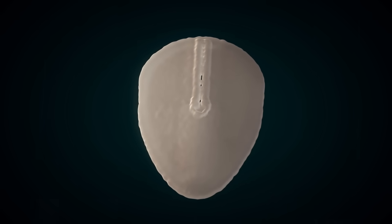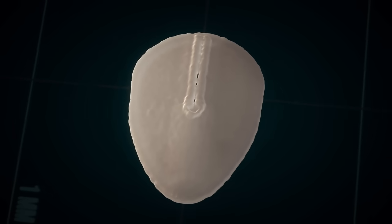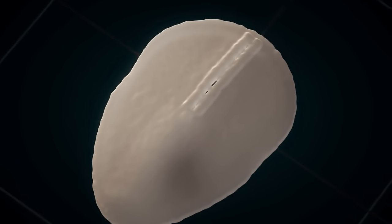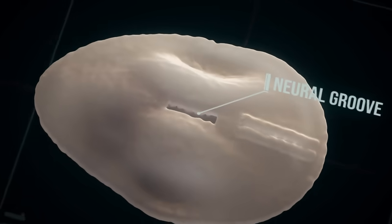In the course of the third week of development, neurulation occurs. At that time, the foundation for the central nervous system is laid. The neural groove is formed.